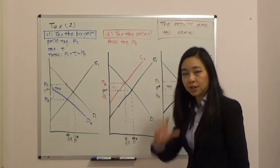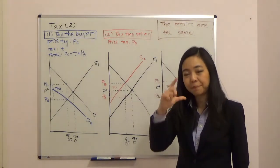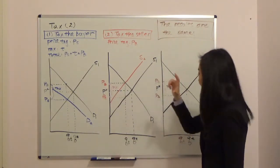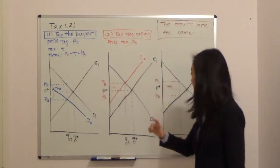You just look at this diagram. When the government is going to collect T dollars of tax, then you find the vertical distance between your demand curve and your supply curve, exactly T dollars. So like that.